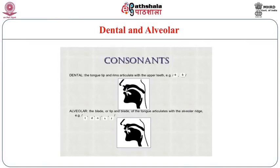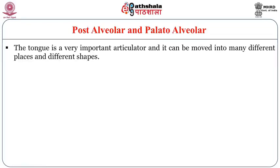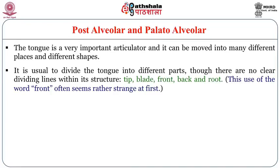Post-alveolar and palato-alveolar articulations also exist. The tongue is a very important articulator — it can be moved into many different places, shapes, and directions. It is usual to divide the tongue into different parts, though there are no clear dividing lines: tip, blade, front, back, and root. A figure can help illustrate how the lip touches the post-alveolar position.